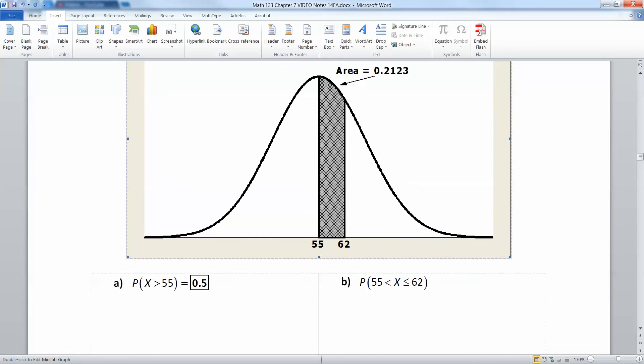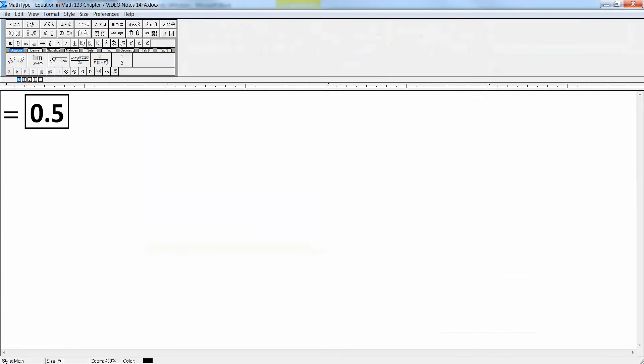55 is the halfway point, so the area on the right hand side of 55 would be 0.5, it would be half. Now what about from 55 to 62? Well that would be 0.2123, that's the area that was actually given to us in the problem.